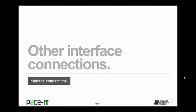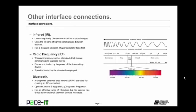Now let's move on to other interface connections — non-wired interfaces. We begin with infrared. This is a line-of-sight interface only — the devices must be in visual range of each other. It uses the infrared band of light to communicate between devices, with a distance limitation of approximately three feet. By today's standards it was fairly slow and is not very common anymore.